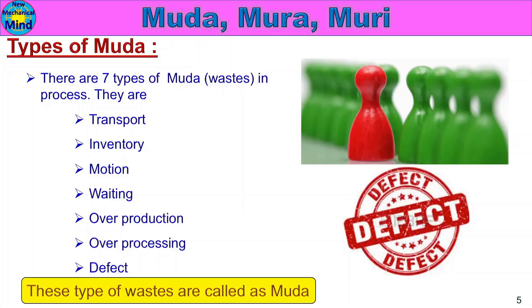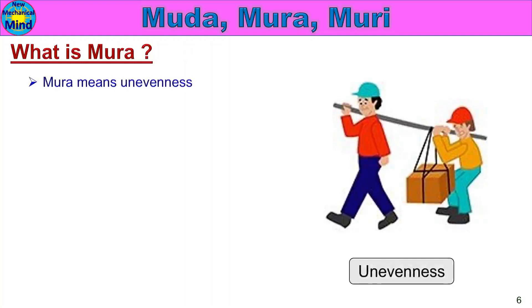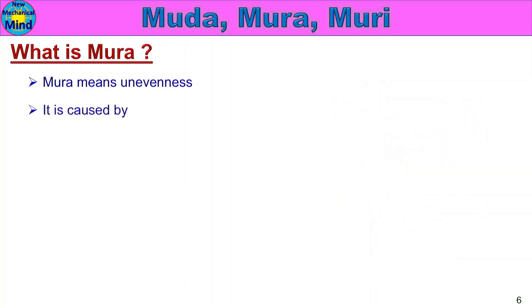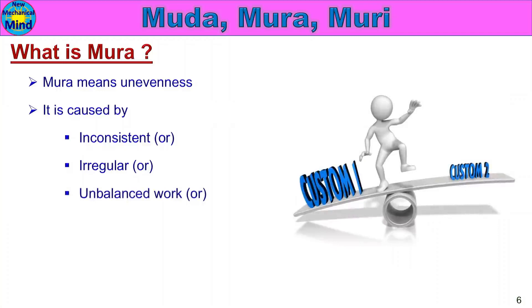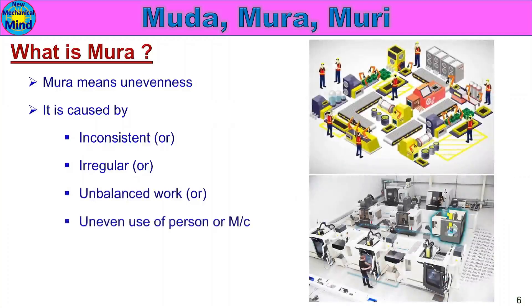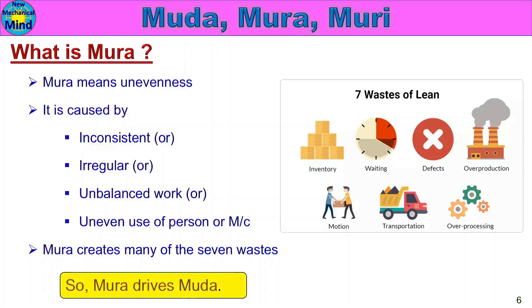In Muda waste activity, Japanese industries continuously work to reduce it — that is the culture. Next one is: What is Mura? Mura means unevenness. One work or activity with an uneven load is caused by inconsistent, irregular, or unbalanced work, or uneven use of a person or machine. Mura creates many of the seven wastes. Mura drives Muda.